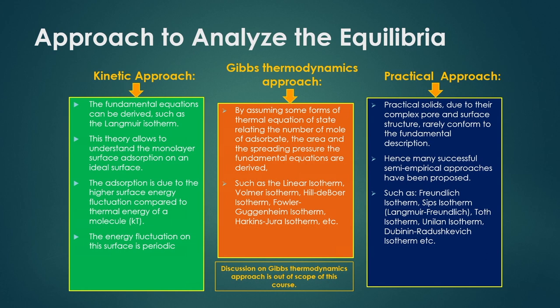These are direct relations based on transport phenomena, since transport phenomena depend on different parameters and variables that affect the process in different ways. As an average, correlations are made with different variables to assess the final yield of adsorption. Isotherms developed empirically include Freundlich isotherms, Langmuir-Freundlich isotherms, Toth isotherms, Unilan isotherm, and Dubinin-Radushkevich-based isotherms.